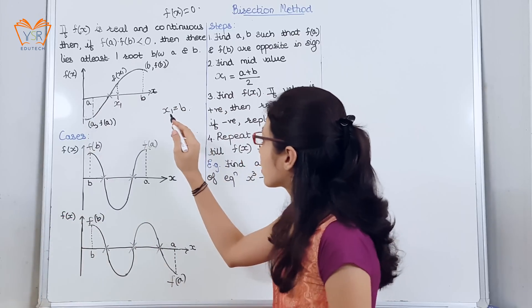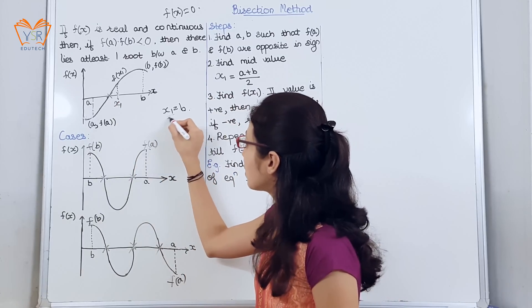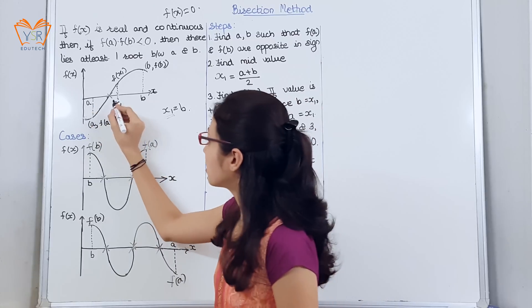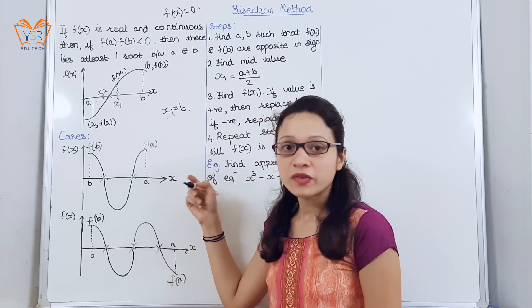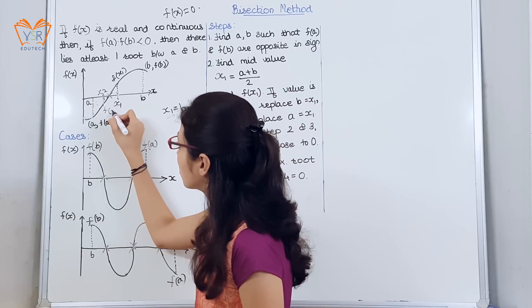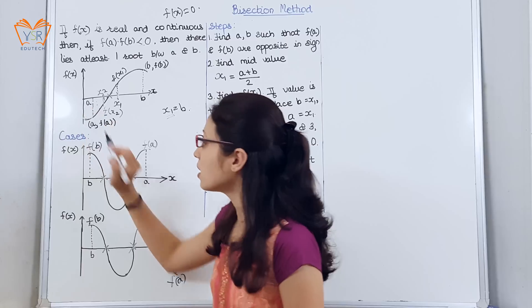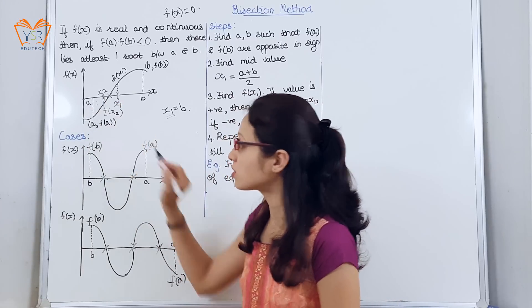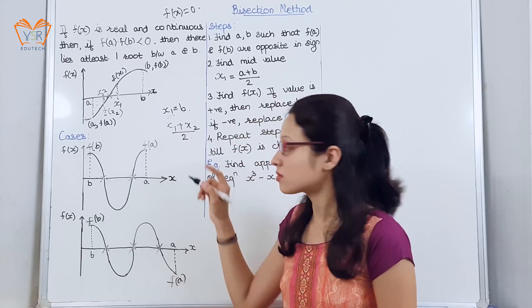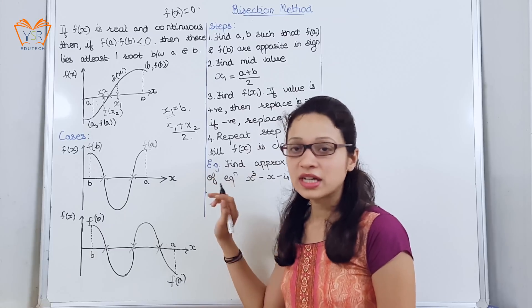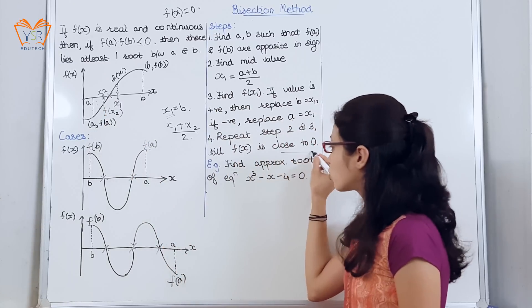This means that the first interval was [a, b]. We found the mid value x1, so the new interval is [a, x1]. Now again we find the mid value in this interval — suppose this is x2. We find f(x2). If f(x2) is negative, we replace a with x2, so the new interval becomes [x1, x2]. For [x1, x2] we again find the mid value using (x1 + x2) / 2. We repeat this procedure until we reach the approximate root that is close to 0.